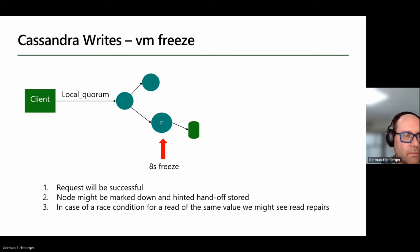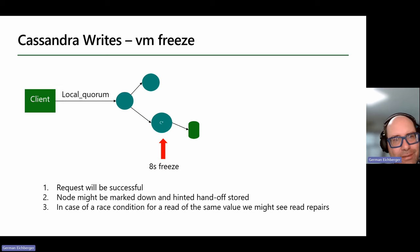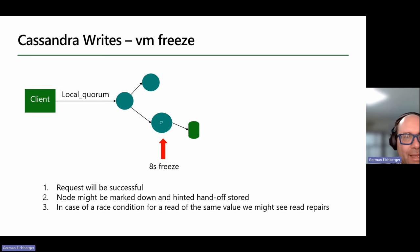The frozen node may get marked down and hinted handoff kicks in. The problem is: when the node comes back up, it still has the stale value. If you do a LOCAL_ONE read on it, you get inconsistent data until hints are caught up. There might also be repairs running which make reads slower. I don't want to sugarcoat it — there can be cascading effects from this scenario.